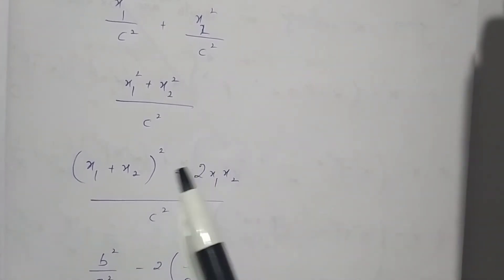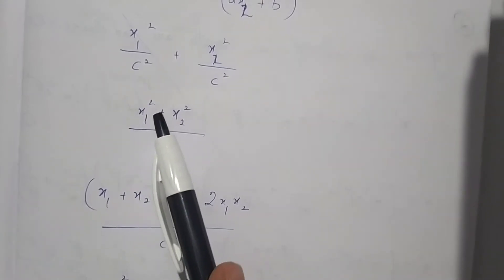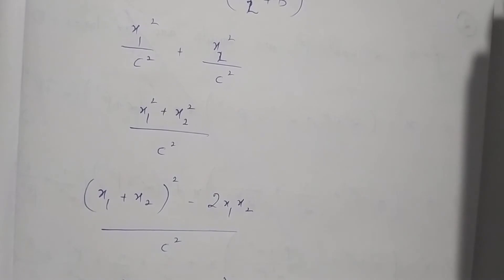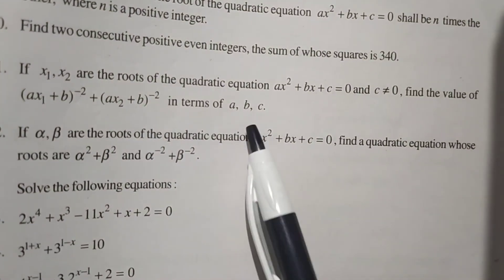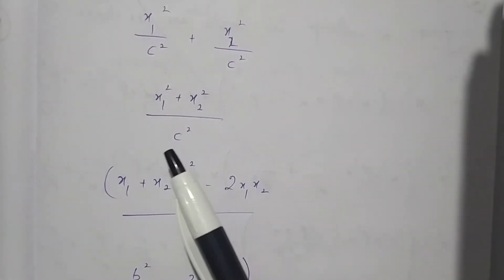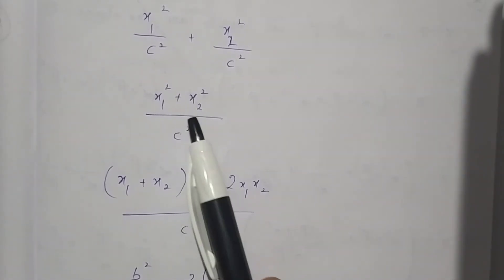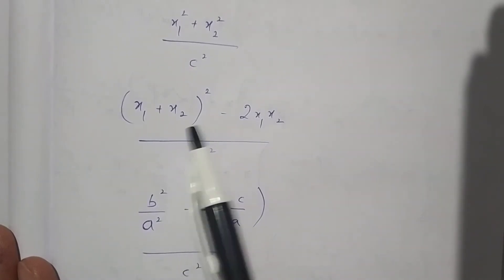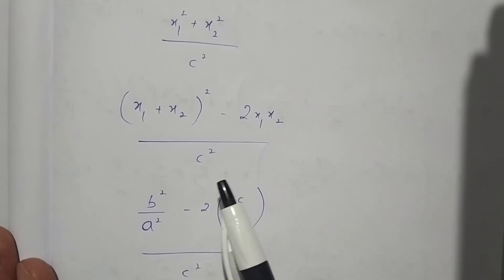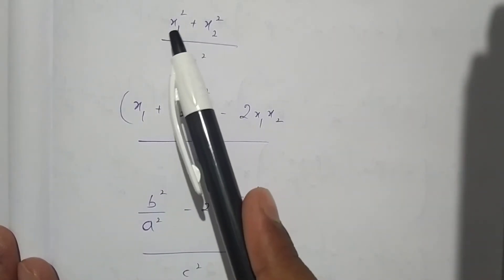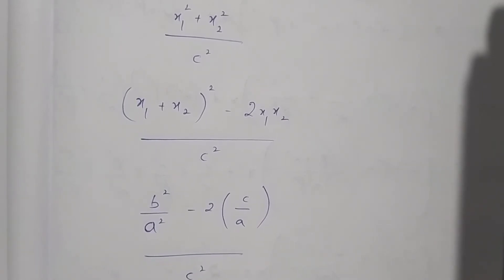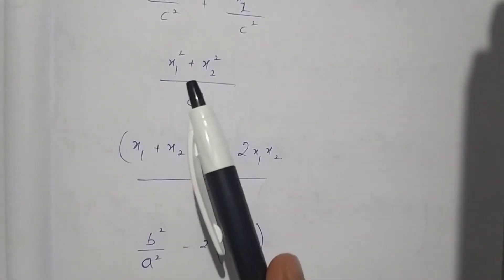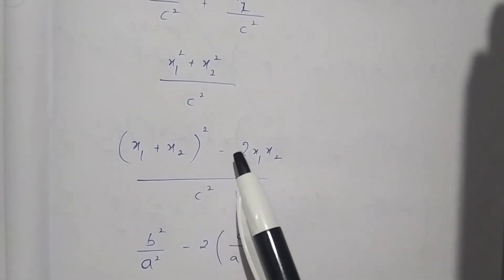Since the denominators are common, we combine them to get (x₁² + x₂²) / c². The question requires the answer in terms of a, b, and c, but we have x₁ and x₂. So we convert x₁² + x₂² using the identity: x₁² + x₂² = (x₁ + x₂)² - 2x₁x₂.